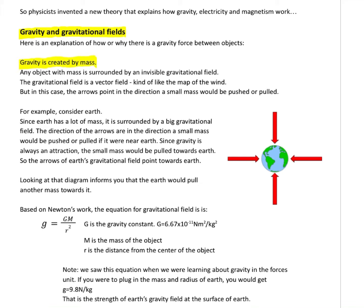Gravity is all about mass. So what field theory says is if you have any object with mass, it's surrounded by an invisible gravitational field - a vector field that we're going to call a gravitational field. The gravitational field is a vector field, but in this case instead of showing the strength of the wind, the arrows show the direction a small mass, an imaginary secondary mass, would be pushed or pulled.